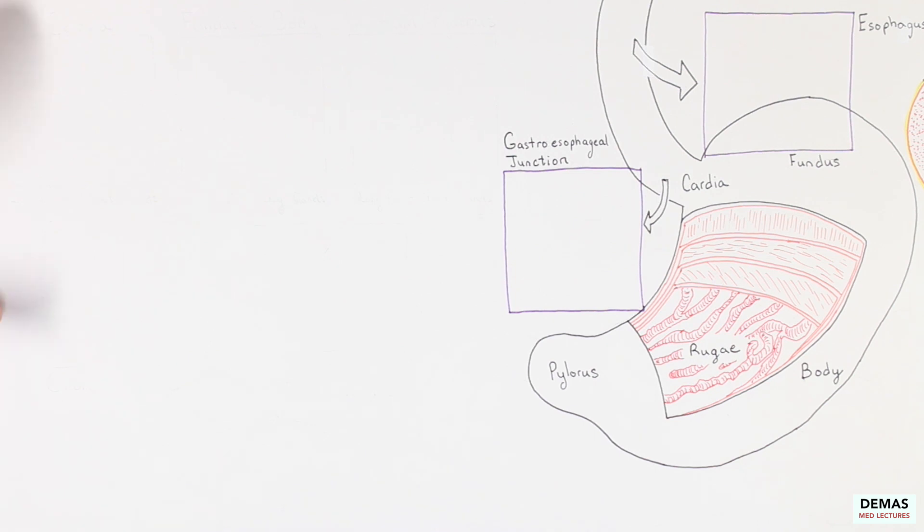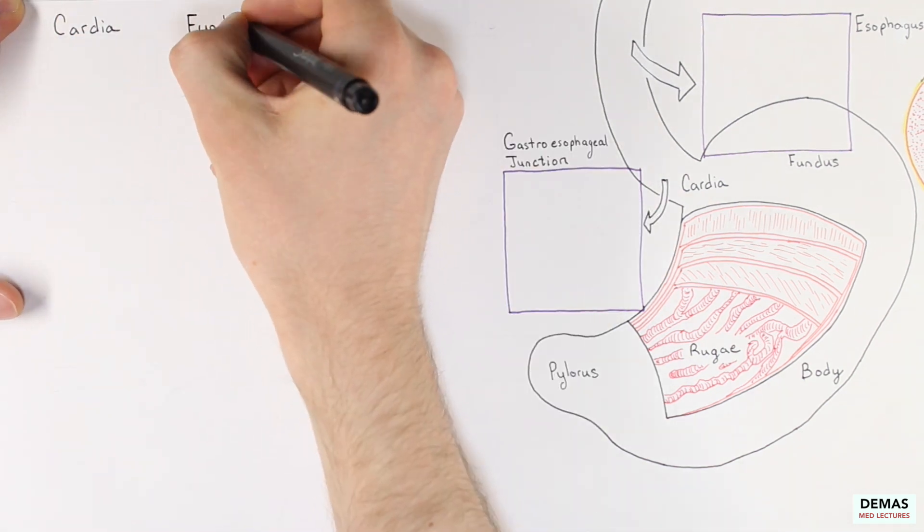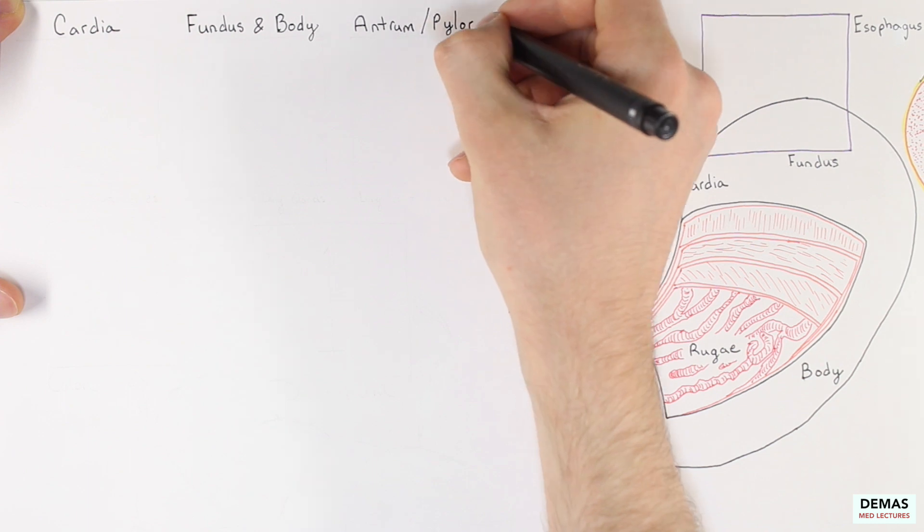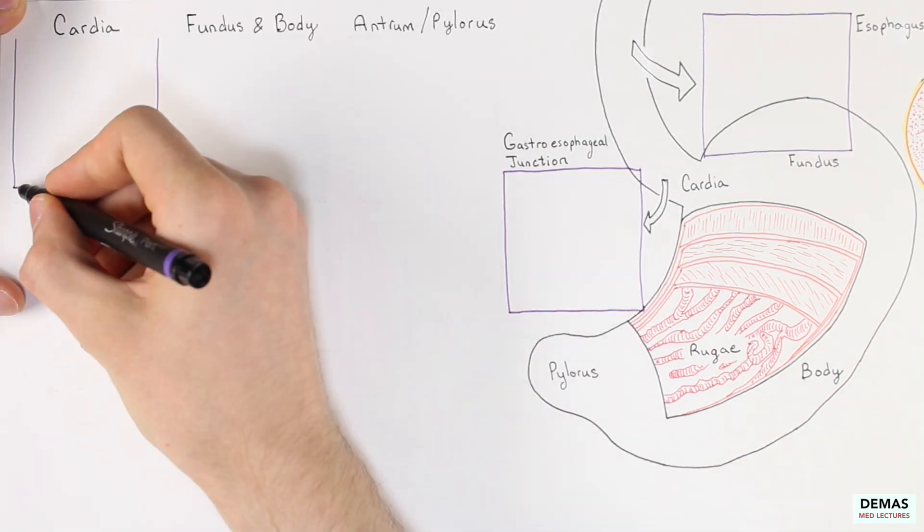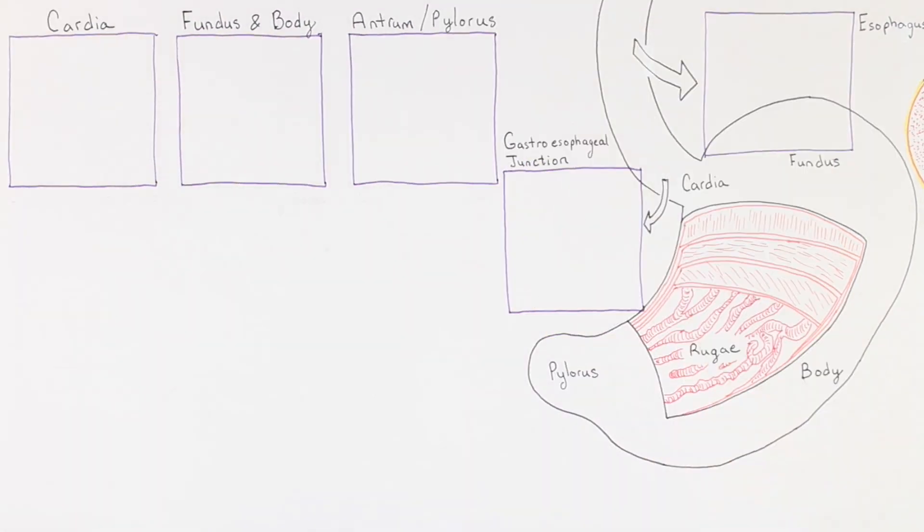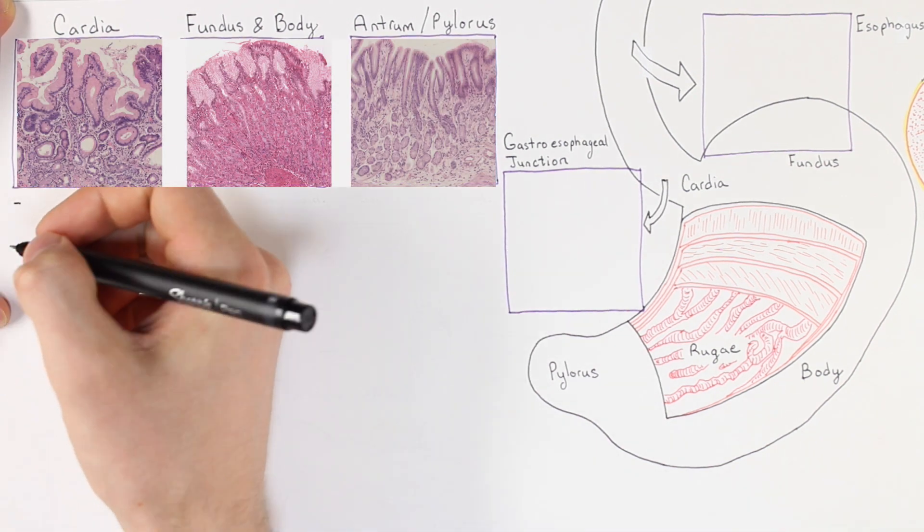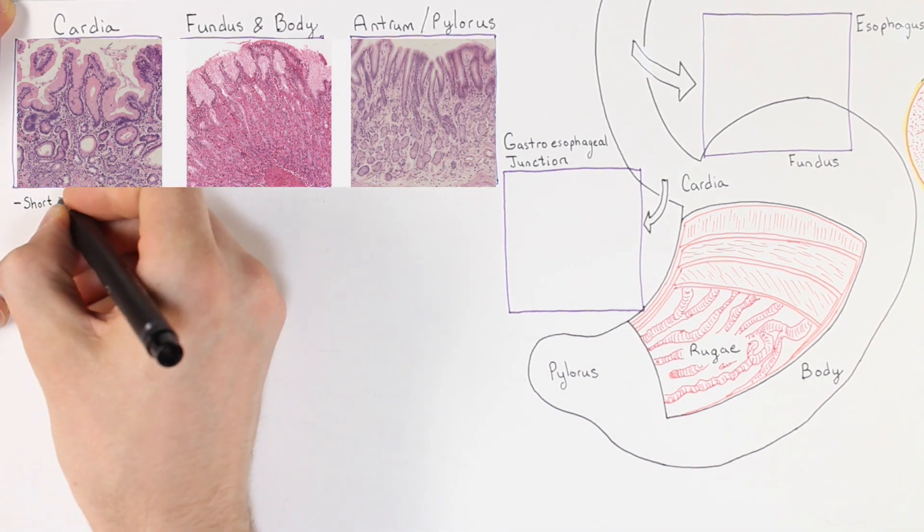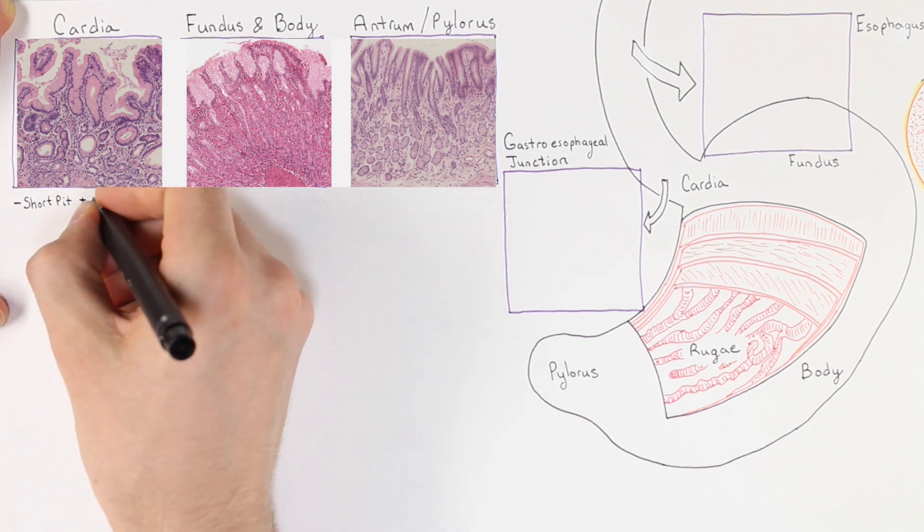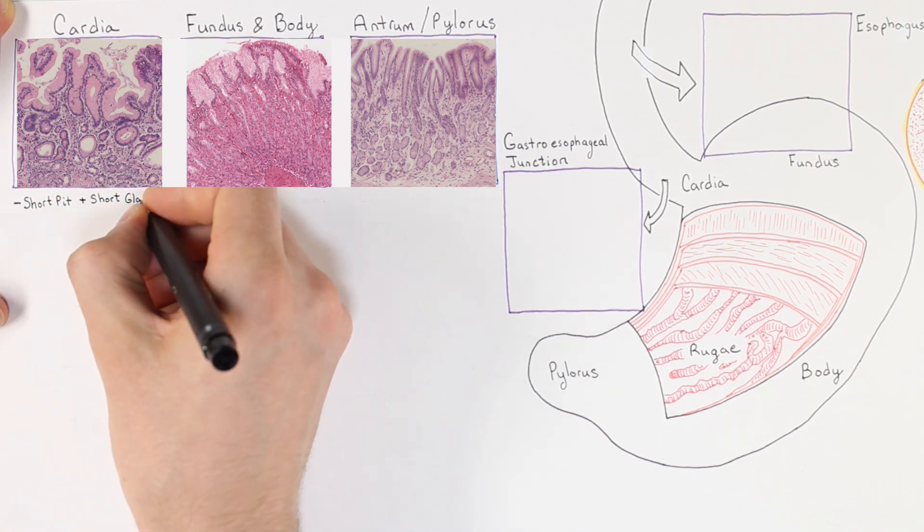We will focus on the cardia, the fundus, and the body together, as well as the antrum or pylorus. We will begin with the cardia, which is shown on the far left. Notice how the pits are relatively short, lined with mucus cells, and the glandular section is also short, that is found below the pits.